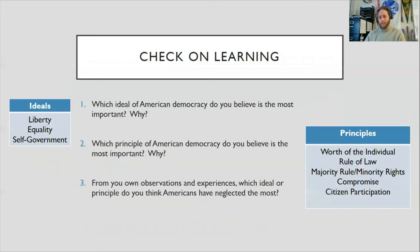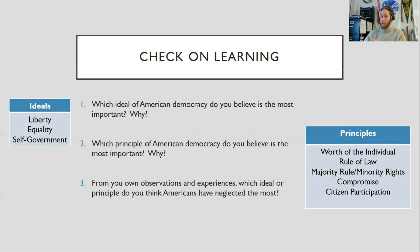These are the check-on learning questions you need to do on Canvas. The first question is: which ideal of American democracy do you believe is the most important, and why? Your options are liberty, equality, and self-government. If you need to go back to refresh what these ideals are, go back earlier in the video and see the definitions on the slide. Commit to one — don't just say they're all important. Pick one and explain why. No wrong answer as long as you back it up.